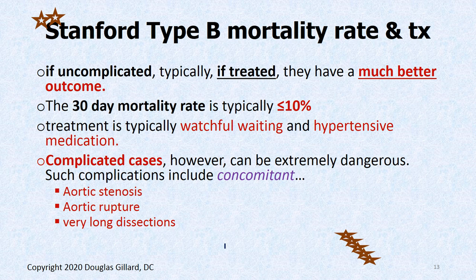Stanford B mortality rates are not as bad. It doesn't involve the ascending aorta — DeBakey 3 — and the 30-day mortality rate with treatment and observation is less than 10%. You don't have to rush into surgery. You can use antihypertensive medications to drop your pressure and watch and wait. That number is based on the premise that you don't have a complication — if you have concomitant aortic stenosis, a leak, hemorrhage, or a very long dissection, then all bets are off.